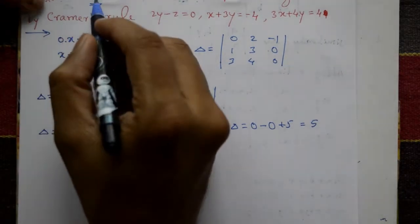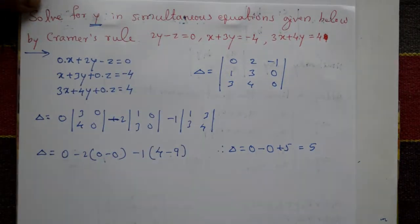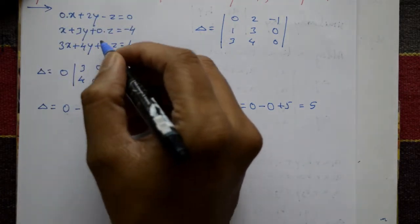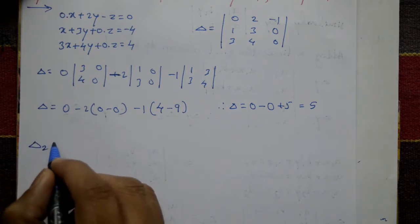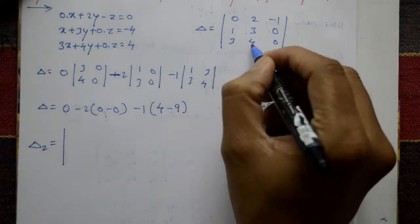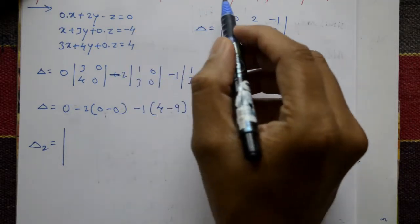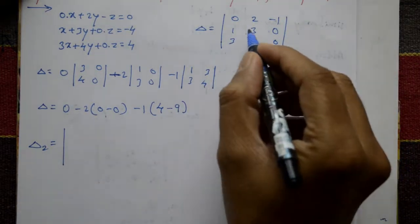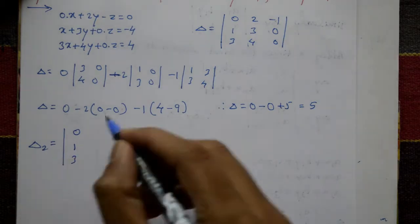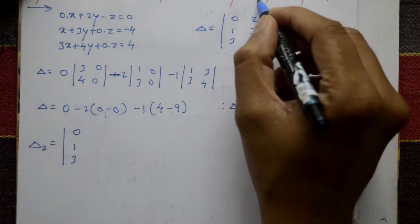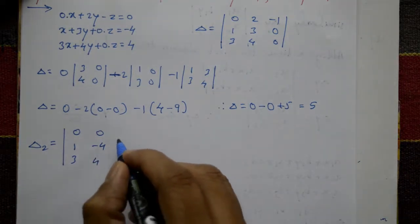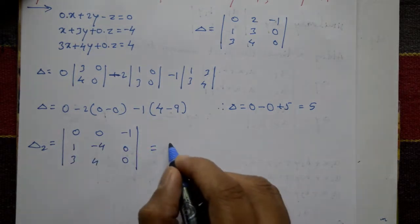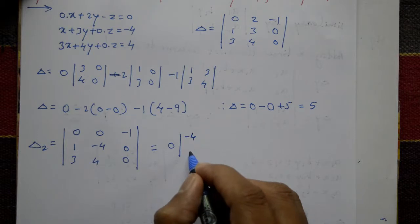Now find the y variable. By Cramer's rule, x is delta_1, y is delta_2, z is delta_3. To find y, compute delta_2 by replacing the second column with the constant values 0, minus 4, 4. So delta_2 has second column 0, minus 4, 4; first and third columns remain the same: first column 0, 1, 3 and third column minus 1, 0, 0.